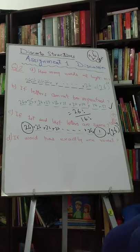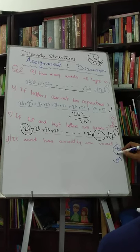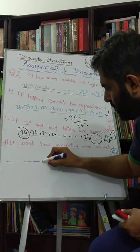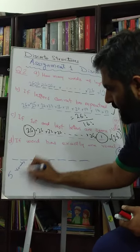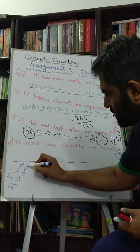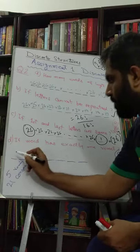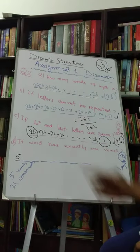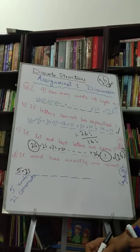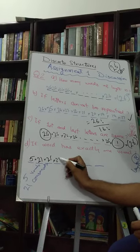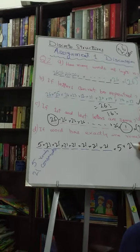Let's move to part D: the word has exactly 1 vowel, letters can be repeated, and the length of the word is 8. We have 5 vowels and 21 consonants. Suppose we put the vowel at the first place — we have 5 choices for that vowel. After that, for each of the remaining 7 positions, we cannot use a vowel, so we have 21 consonant choices each. That gives 5 into 21 raised to the power 7.